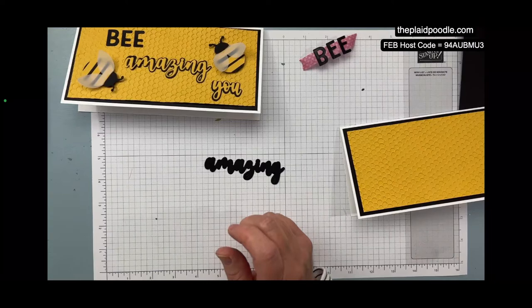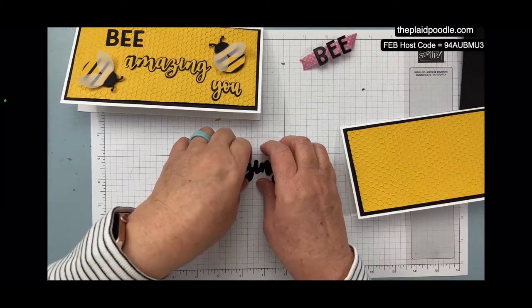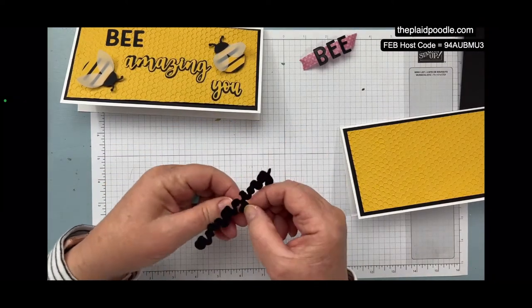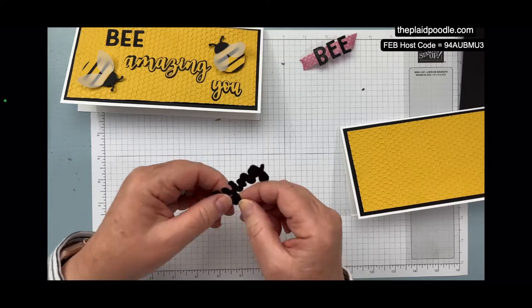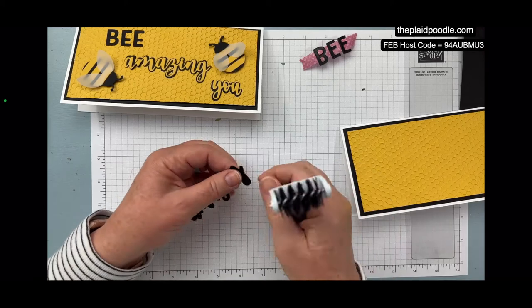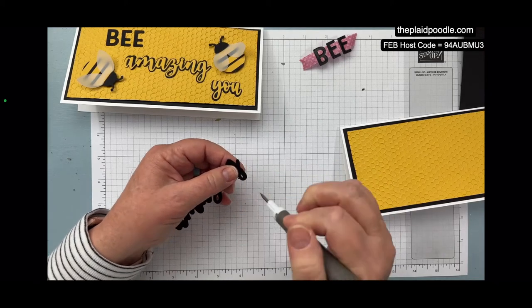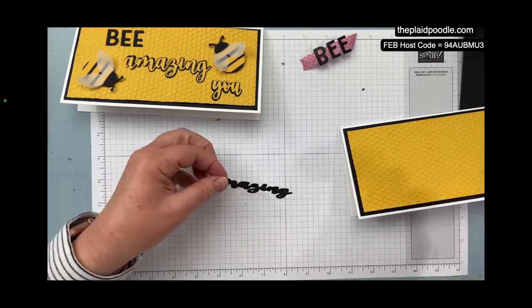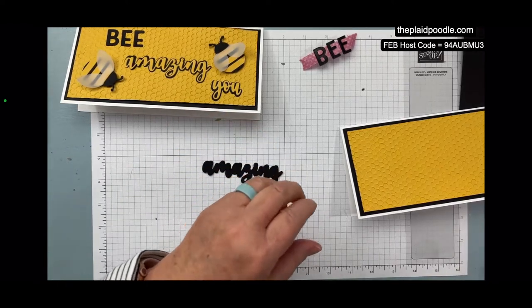So I use the dies—these Amazing Thanks dies—and they have the background and the foreground. I love that.